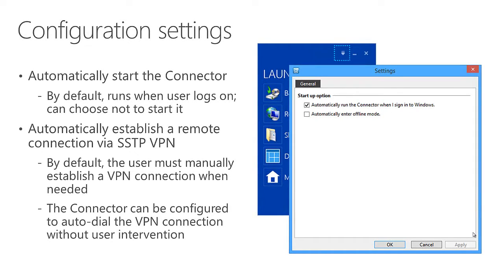The configuration settings have been greatly simplified over previous versions, primarily because those alerts are gone. Now the settings cover whether you want to run the Essentials Connector when you sign into Windows, and whether you want to automatically enter offline mode - meaning, do you want to automatically establish a VPN connection when needed to access resources on the Essentials server. If you check this box, after the next login or restart they'll get a confirmation that autodial VPN is being set up, making connectivity seamless whether local or working remotely.